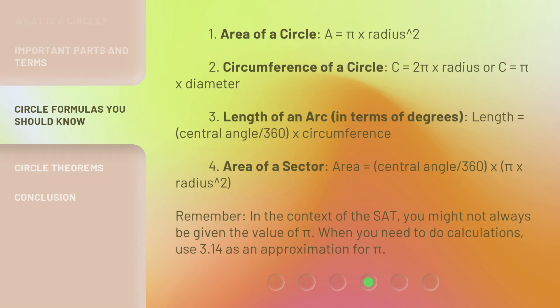1. Area of a circle: A = π × radius². 2. Circumference of a circle: C = 2π × radius or C = π × diameter.